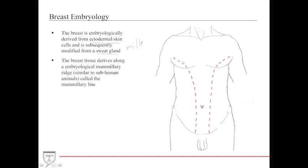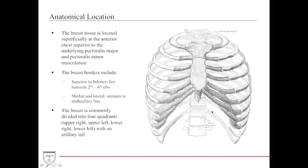The breast tissue derives along what is called the embryological mammary ridge or mammary line, which extends from the axilla down into the pubic area. In other subhuman animals such as dogs, they will have nipples in multiple different locations along this mammary ridge, and humans in certain conditions can actually have an accessory nipple and breasts anywhere along this line.